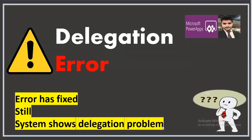Hello everyone, this is Prashant Choudhury. Welcome to my channel Classic Power App. In this video, we'll be discussing the problems generated when your system shows a delegation error. Delegation warnings appear when a function written over a control is unhealthy — a yellow triangle appears indicating the function might not work on a large dataset. I'm showing how I removed the delegation warning symbol from my function, yet my system was still showing delegation problems.